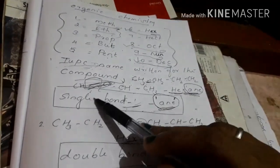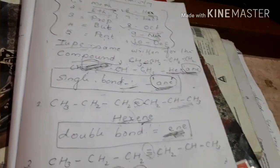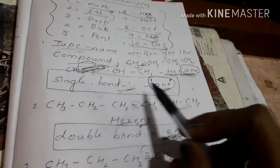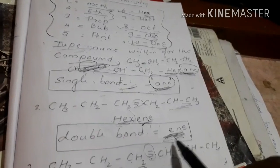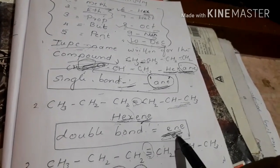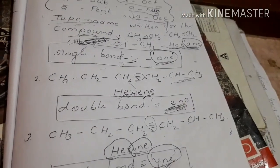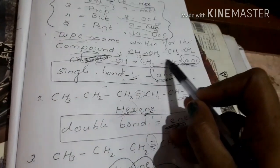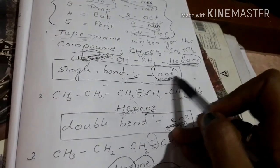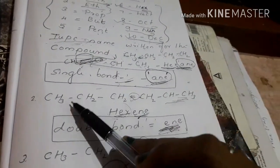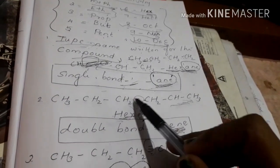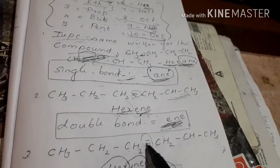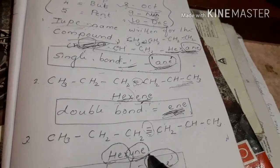In this case, we are using single bond, double bond, triple bond. For example, single bond suffix is 'ane', double bond is 'ene', triple bond is 'yne'. Now we have to match the carbon prefix with the correct bond suffix.